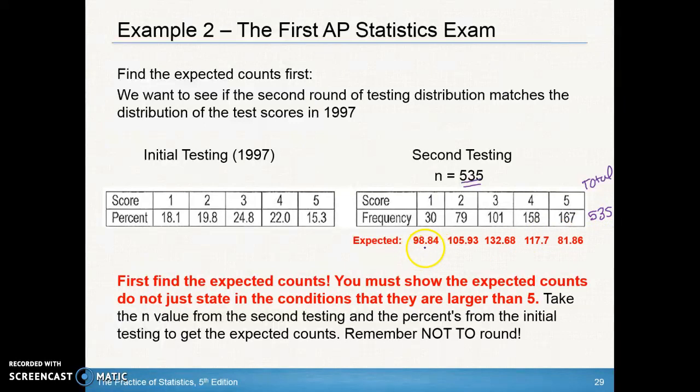To get your expected counts, we're going to take the percentage that we had from the initial testing and multiply that by 535. So here, for example, the 98.84, that came from 535 times 0.181. The 105.93 came from 535 times what was the percentage of 2, which was 0.198. And then we did that for the rest of the scores.